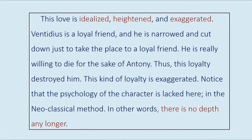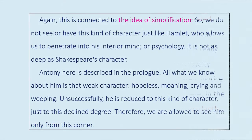Ventidius is a loyal friend, and he is narrowed and cut down just to fill the role of a loyal friend. He is really willing to die for the sake of Antony; thus this loyalty destroyed him. This kind of loyalty is exaggerated. Notice that the psychology of the character is lacking here in the neoclassical method — in other words, there is no depth any longer. We do not have this kind of character like Hamlet, who allows us to penetrate into his interior mind or psychology. It is not as deep as Shakespeare's characters.